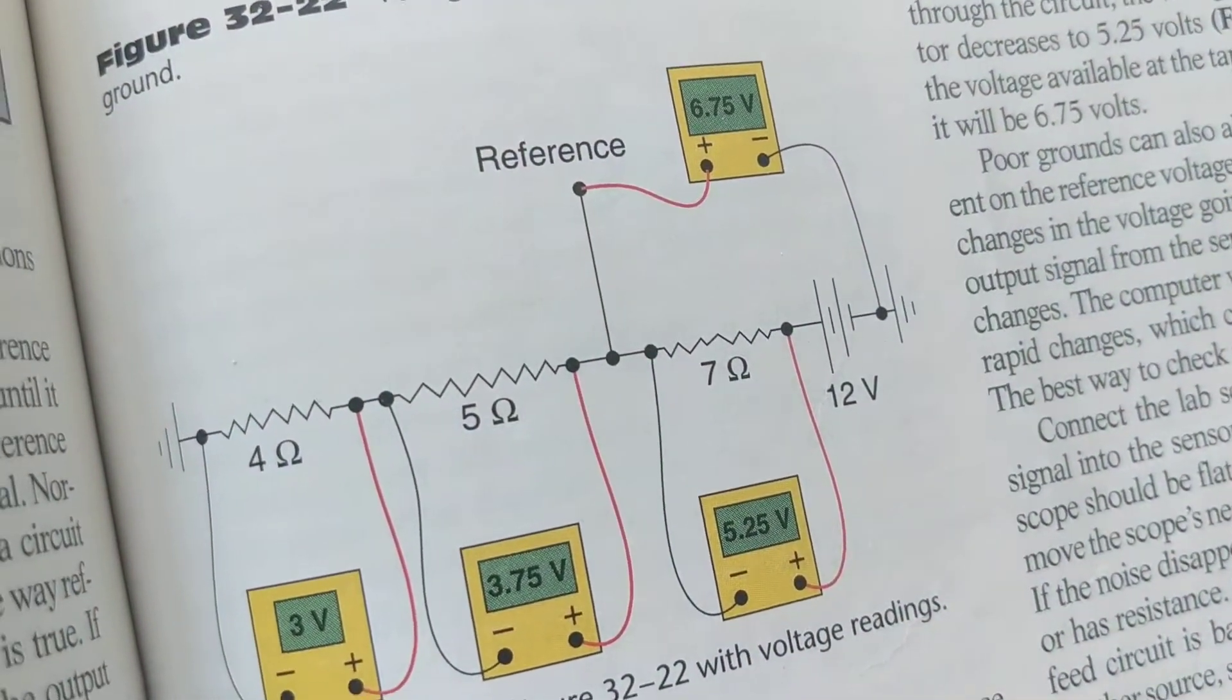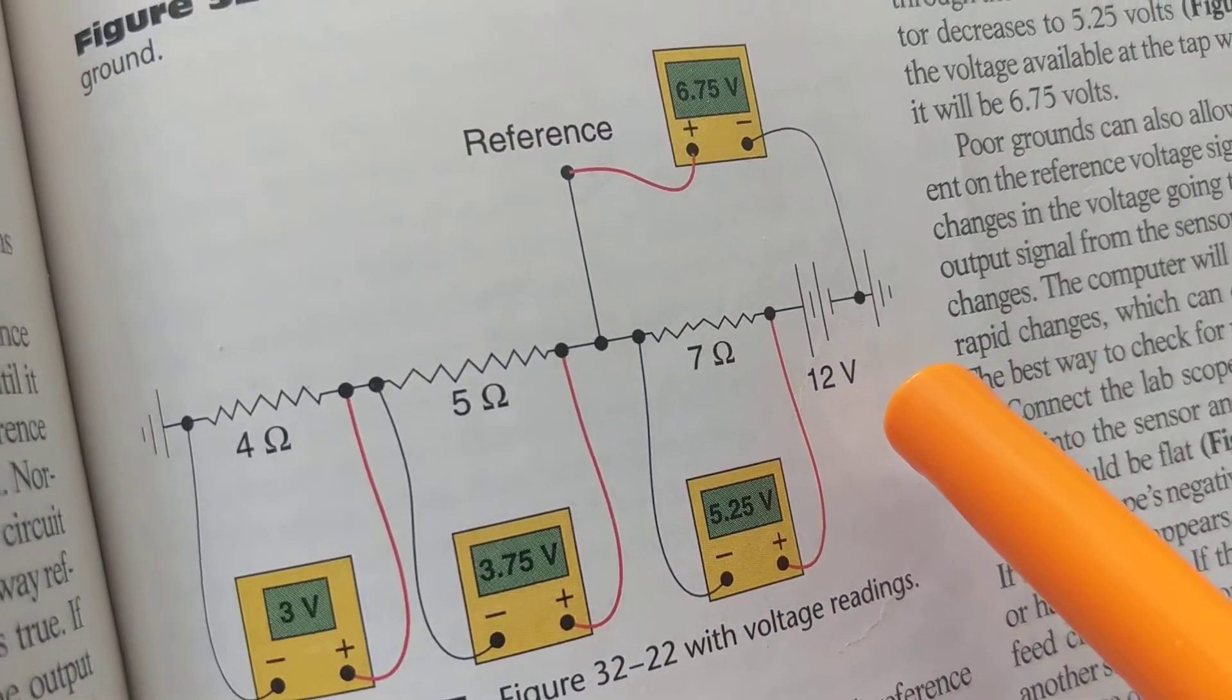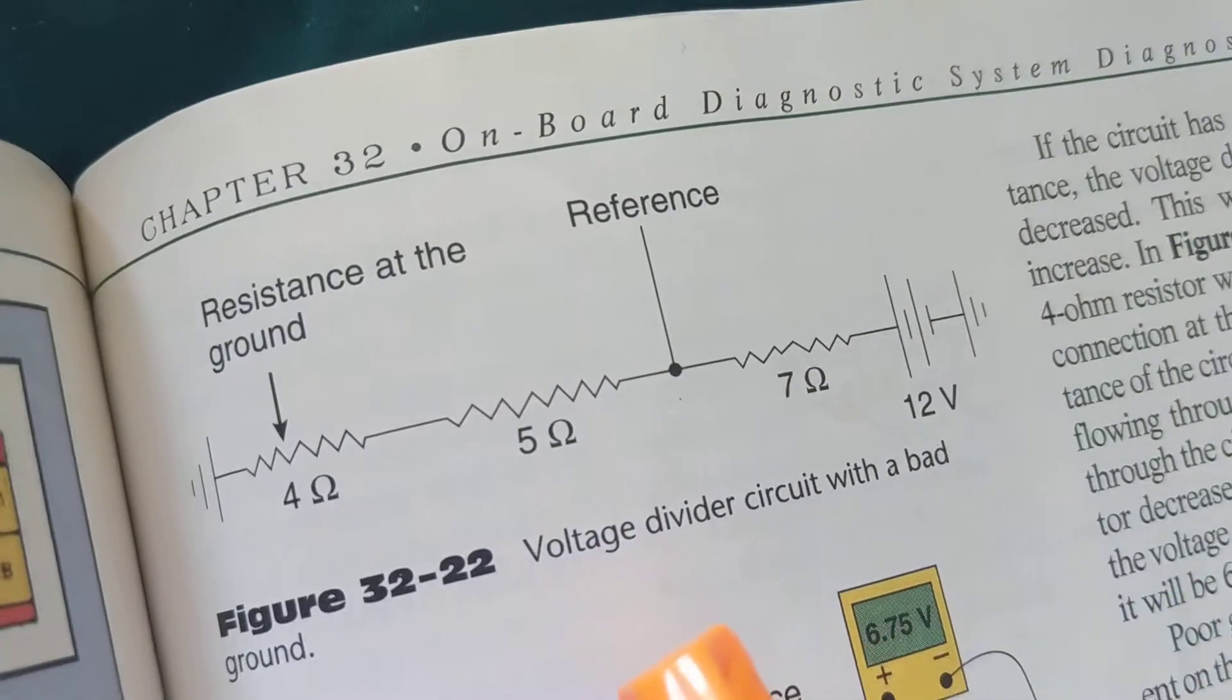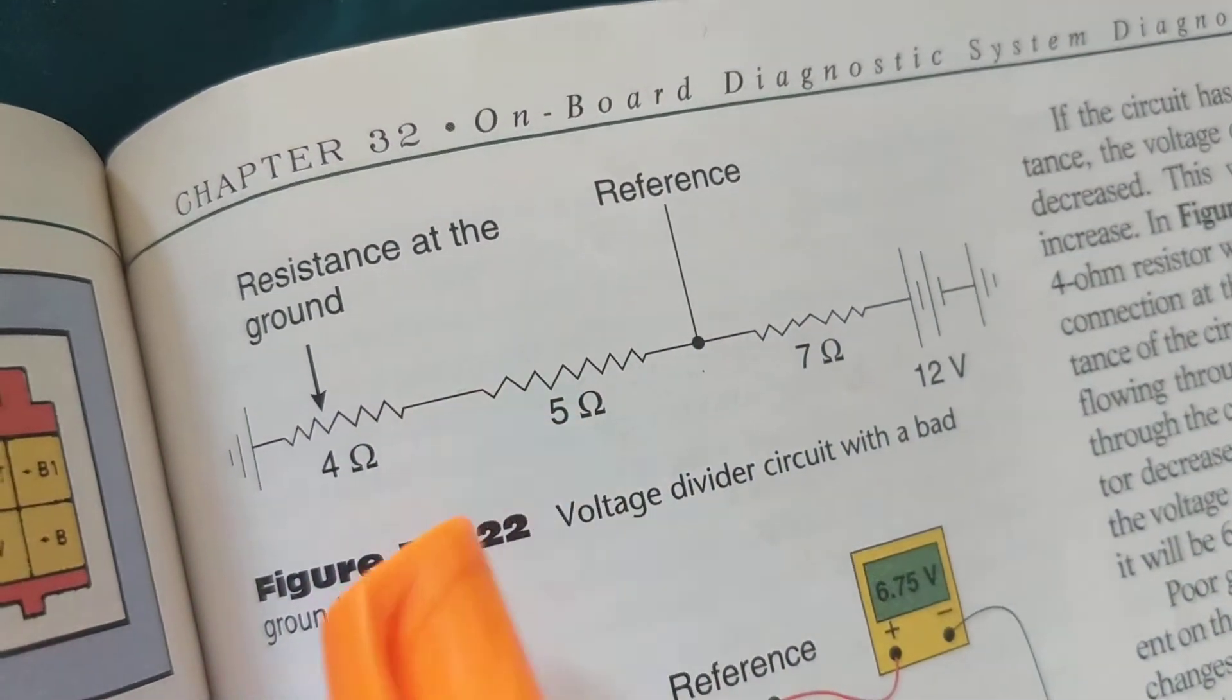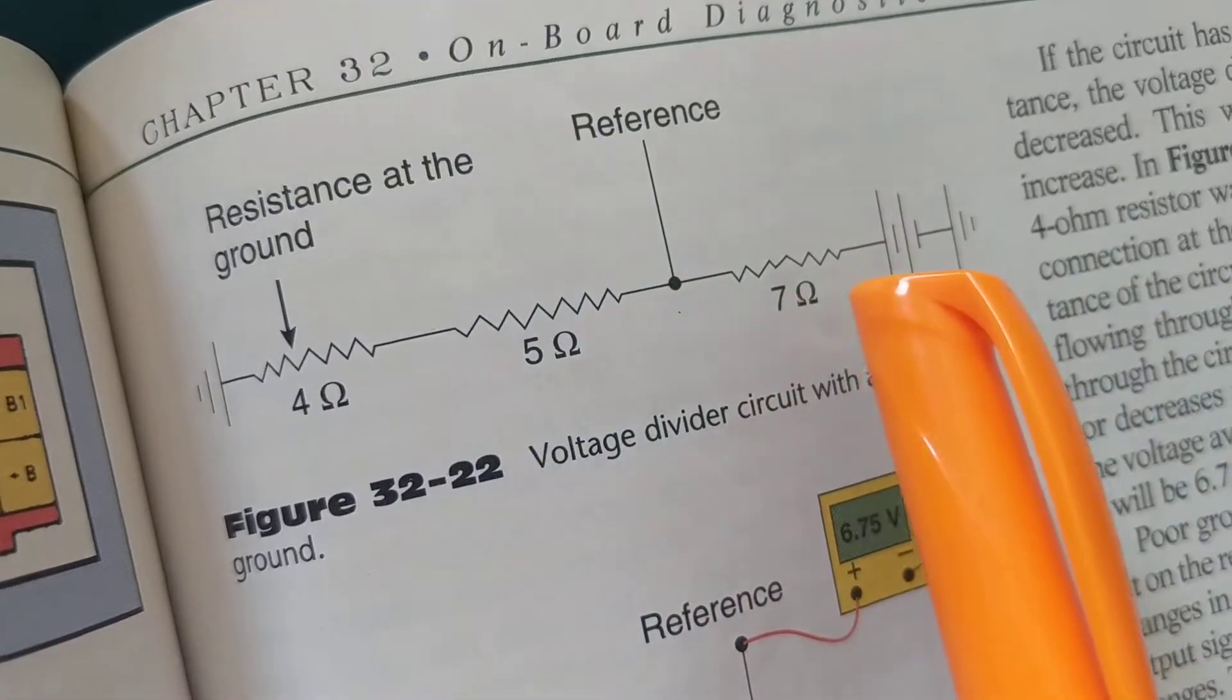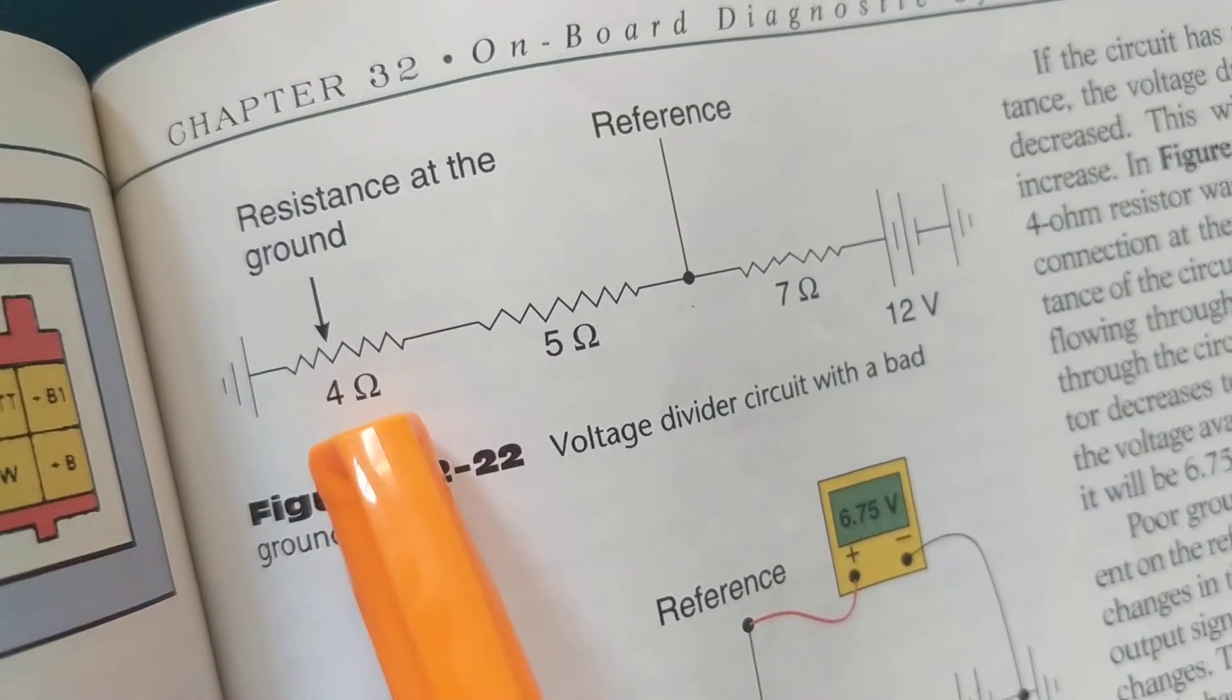I keep on going over and over on this. The ground always stays there. Same thing over here. This was the same thing, but they're trying to tell you 5 ohms here, 7 ohms here. What's the problem over here? There's a resistance to ground.